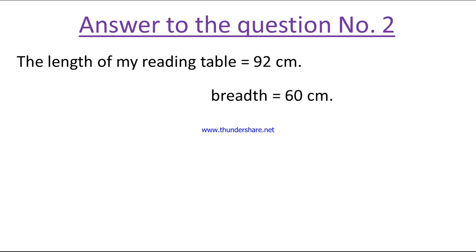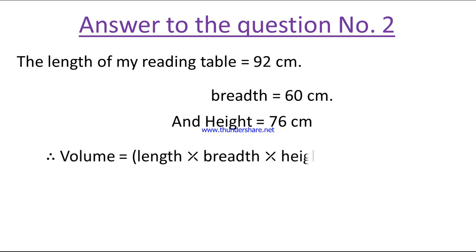Hence volume equal length into breadth into height cubic centimeter, equal 92 into 60 into 76 cubic centimeters, equal 419,520 cubic centimeter. Here I have multiplied 92, 60, and 76. So the table occupied 419,520 cubic centimeter (CC) space of house.